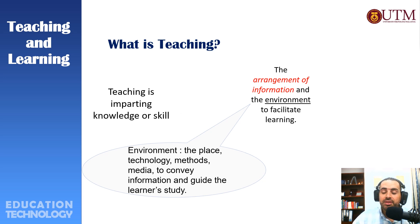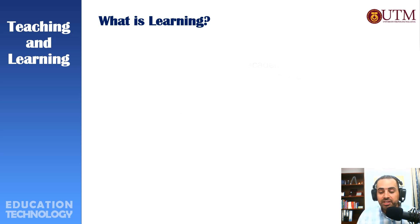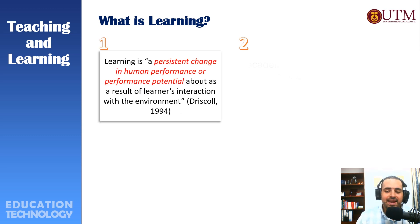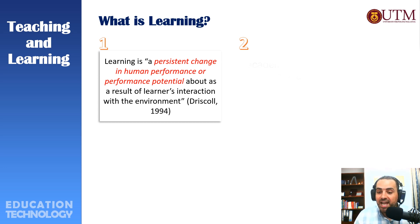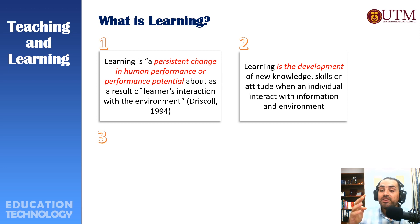Teaching is also the arrangement of information and the environment — which includes the place, technology, method, media, and information — to facilitate learning. Teaching is transferring and imparting knowledge and skills from teachers to their students. Now we understand teaching, and receiving this knowledge is learning. We can define learning as any change that happens to us as humans as a result of interaction between students and their teacher.